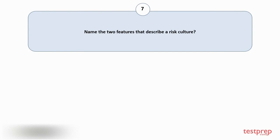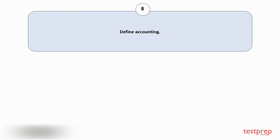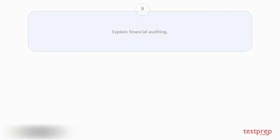The two features used to describe a risk culture are: one, risk appetite; two, reaction towards negative outcomes. Question number eight: Define accounting. The process of recording financial transactions pertaining to a business is called accounting. The accounting process is inclusive of summarizing, analyzing, and reporting these transactions to regulators, oversight agencies, and tax collection entities.